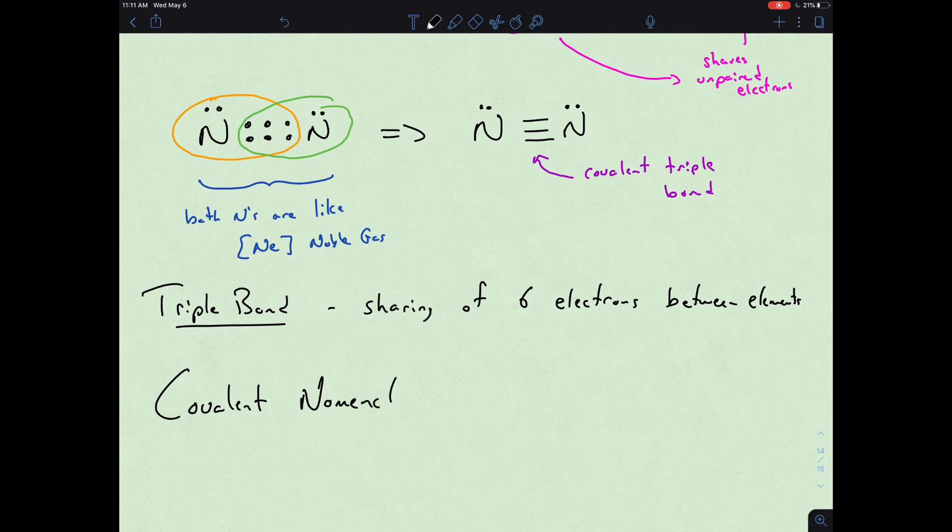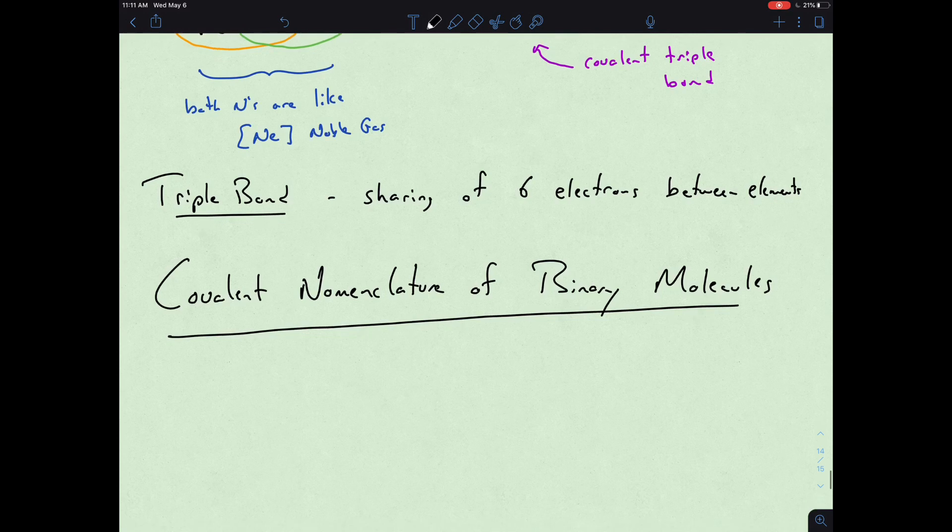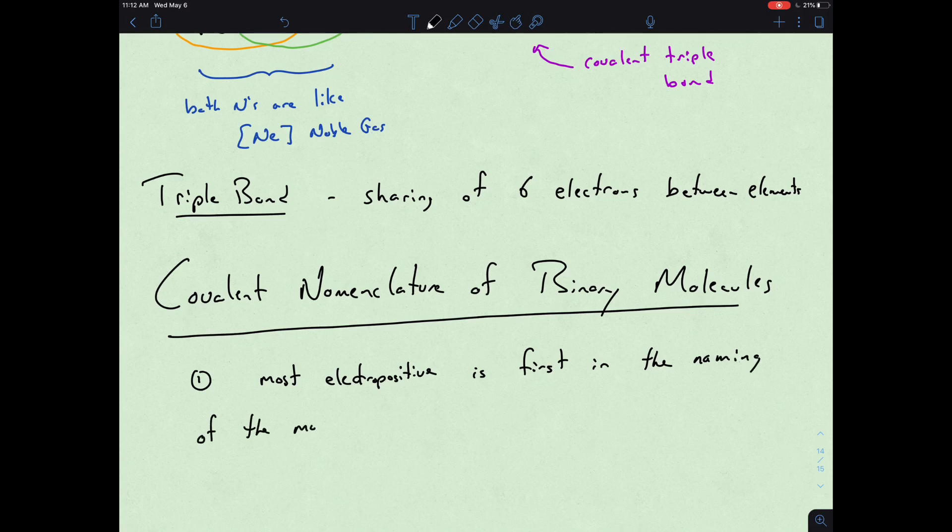Of binary molecules, we still do kind of the same gambit as far as the rules. The most electropositive comes first or is first in the naming of the molecule, and it has the same name as what we find on the periodic table. So that's still the first idea.